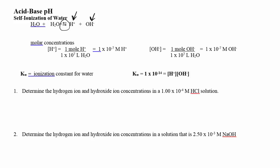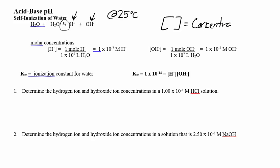At 25 degrees Celsius — normal conditions — we know our concentrations. These brackets are shorthand: brackets equal concentration, which is in molarity. When I see a bracket, it means the concentration.